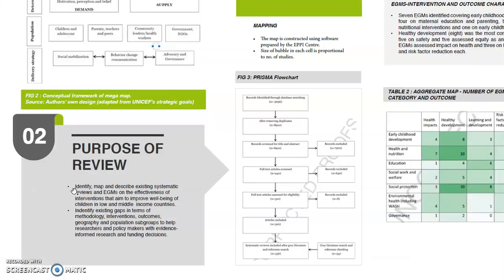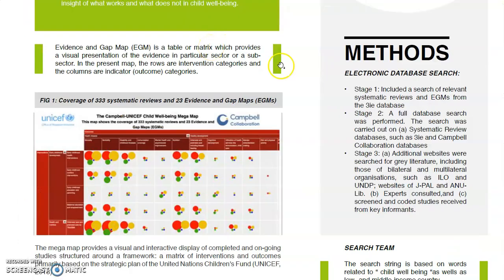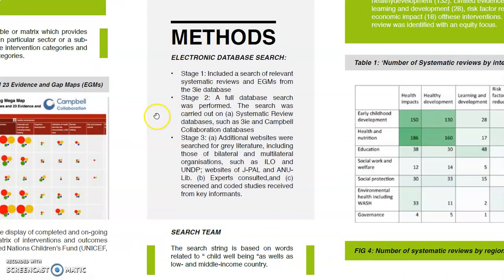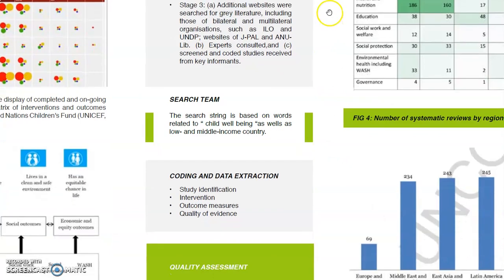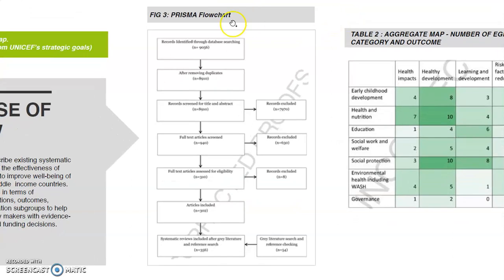Section 3 focuses on methods. The electronic database search process has three stages. Stage 1 included a search on systematic reviews and EGMs from the 3ie database. In Stage 2, a full database search was performed. And finally, in Stage 3, additional websites were searched for grey literature, including those of bilateral and multilateral organizations. The studies identified through search were screened and coded by two reviewers, and the number of studies identified are recorded in the PRISMA flowchart. For quality assessment of studies, systematic reviews were scored on the AMSTAR II checklist.